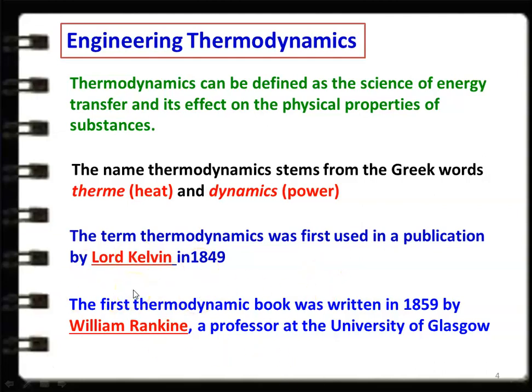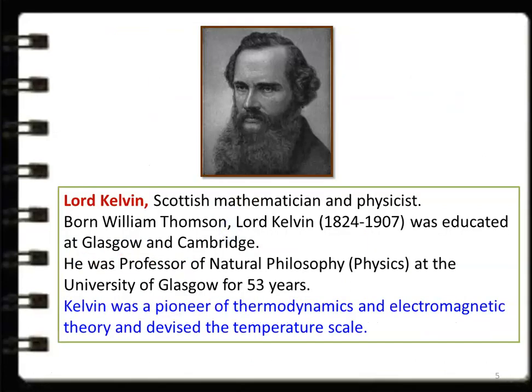Lord Kelvin was a Scottish mathematician and physicist, born William Thomson. He lived between 1824 and 1907, was educated at the University of Glasgow and Cambridge, and was a Professor of Natural Philosophy — that is, Physics — at the University of Glasgow for 53 years. Kelvin was a pioneer in thermodynamics and electromagnetic theory, and devised the Kelvin temperature scale, which we will discuss later.